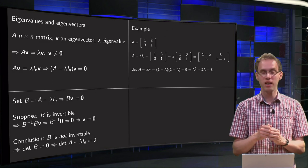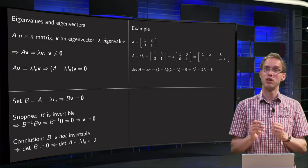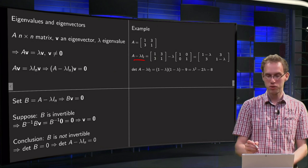So we have our matrix A here, 1, 3, 3, 1, and suppose I want to compute the lambda. So what do we need to do? First I compute A minus lambda times the identity matrix, a 2 by 2 matrix.